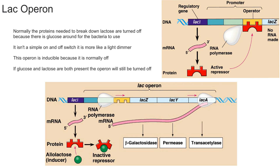If you look down here, you can remove the repressor if you have lactose around. However, keep in mind that if you have glucose and lactose both present, the operon will still be turned off. It doesn't show it in this diagram, but even with lactose present, glucose presence keeps the operon off.